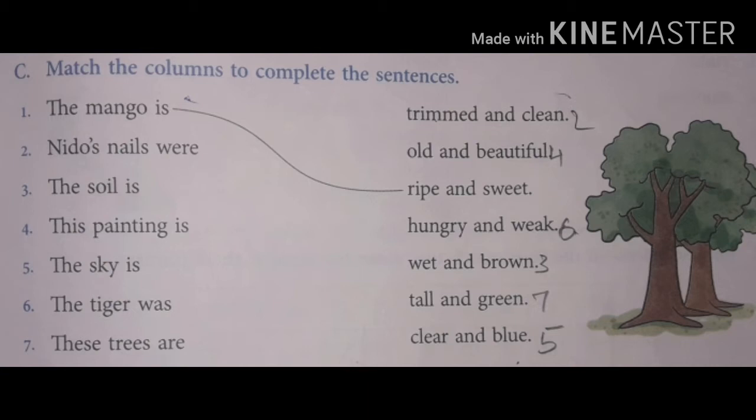Fourth sentence: this painting is old and beautiful. Fifth sentence: the sky is clear and blue. Then the sixth sentence: the tiger was hungry and weak. The seventh sentence: these trees are tall and green. Now we come to the next exercise.